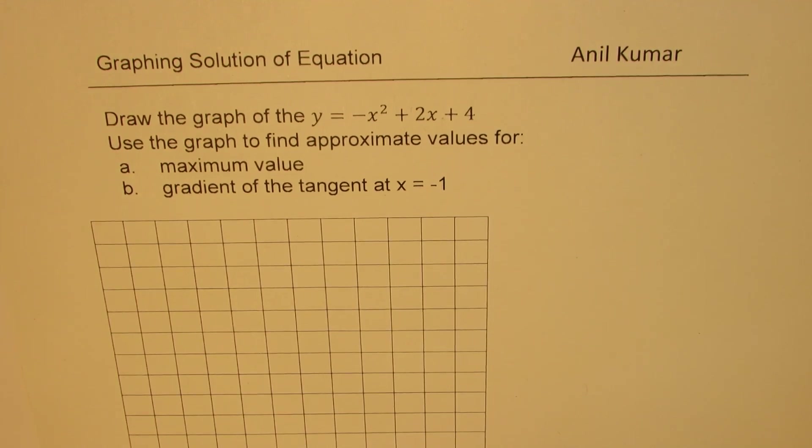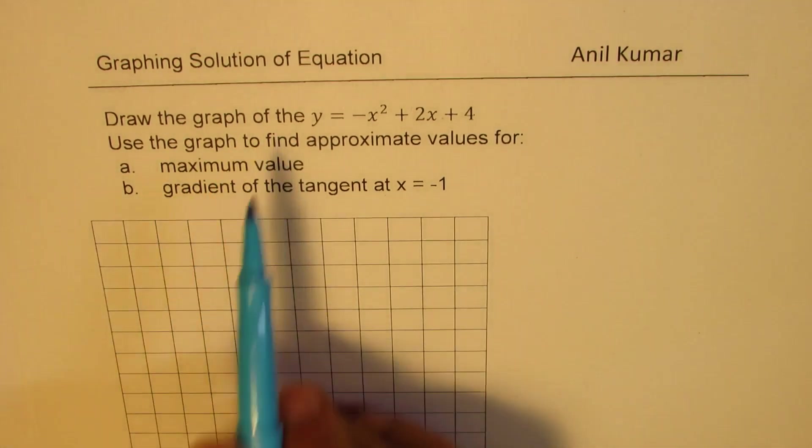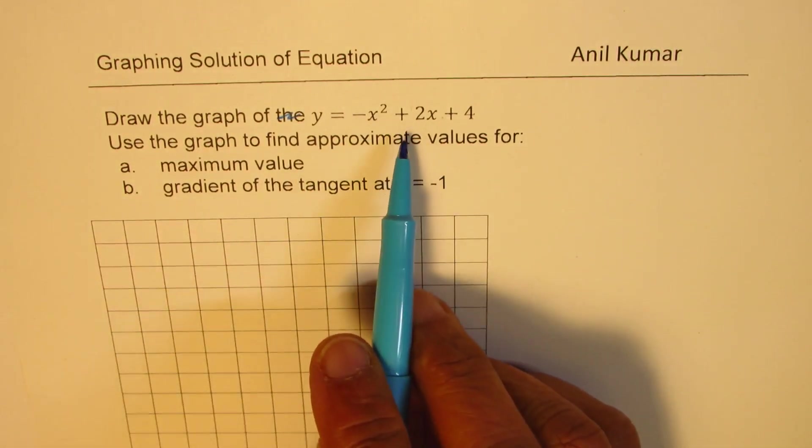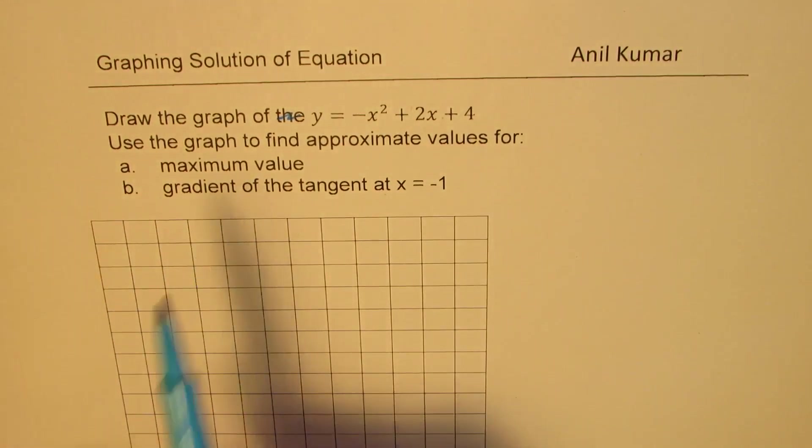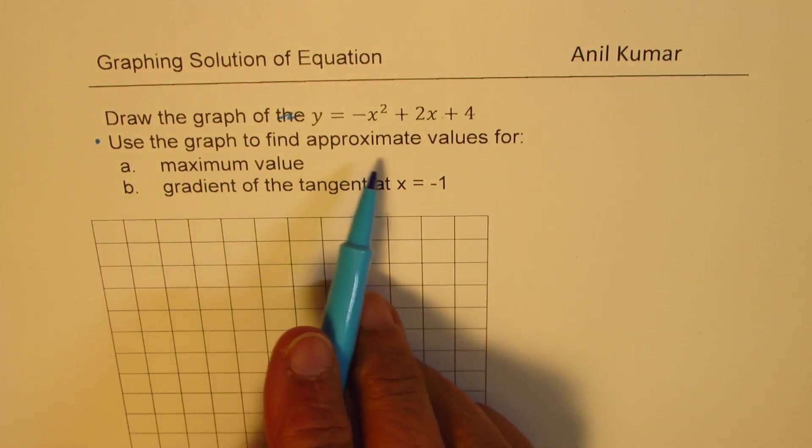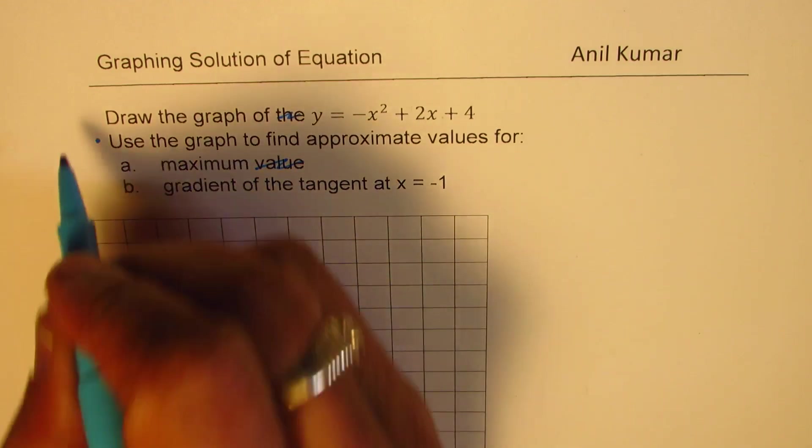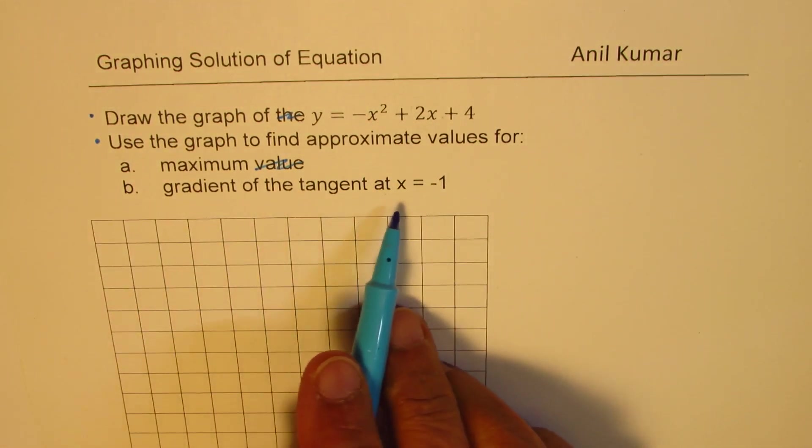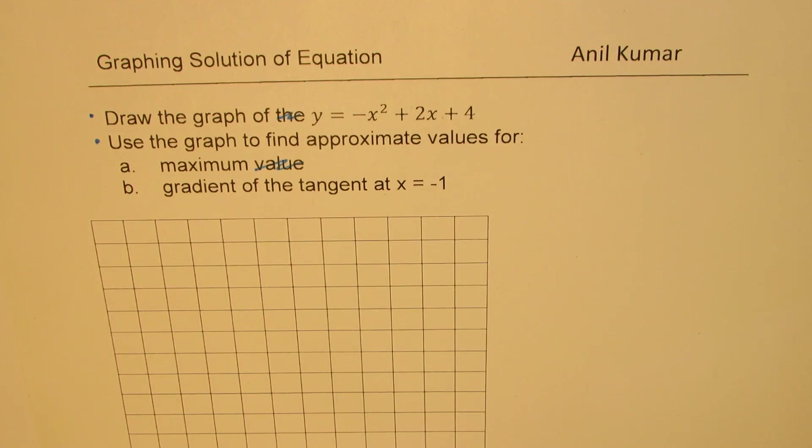The question here is: draw the graph of y equals minus x squared plus 2x plus 4. Use the graph to find approximate values for a) maximum value and b) gradient of the tangent at x equals minus 1. You can always pause the video, answer the question, and then look into my suggestions.